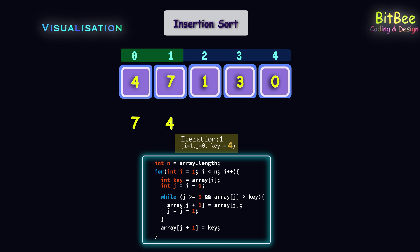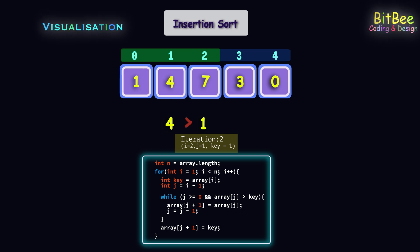In the next outer iteration, i becomes 2 and j becomes the 1st index, and the key value is at the 1st index. Since 7 is greater than 1, 7 and 1 will be swapped. Next, 4 and 1 will be compared. Since 4 is greater than 1, they will get swapped again. Now j is 0 and we will jump out to the next outer iteration, that is iteration 3.